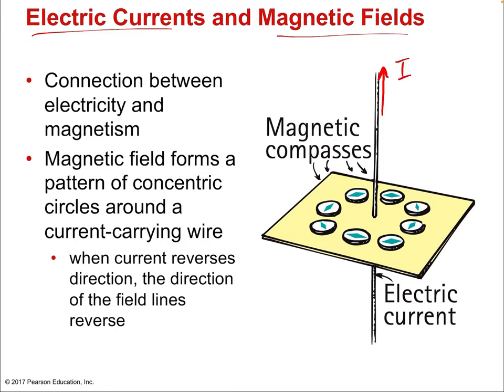The connection between electricity and magnetism is well illustrated here: the magnetic field forms a pattern of concentric circles around a current-carrying wire. Because electron motion creates magnetic fields, and current is electron motion, the type of field looks different from before. When there was circular electron motion, the magnetic field was straight. Now with straight motion of the current, the magnetic field is circular — they've swapped. Mathematically this all makes sense.